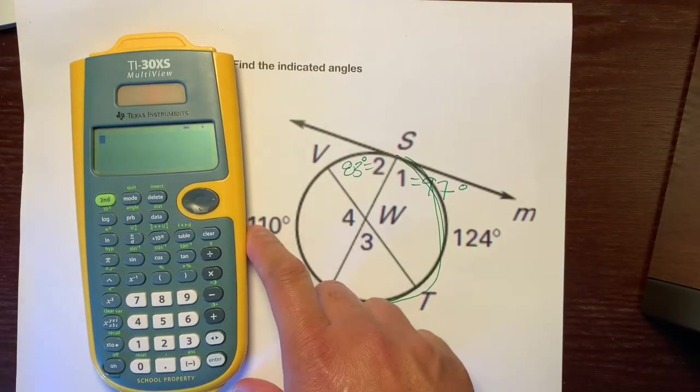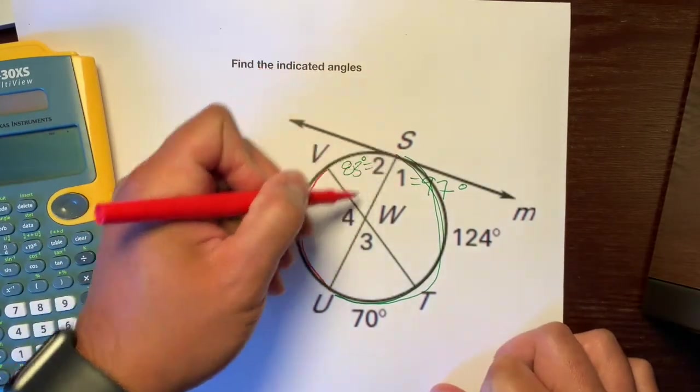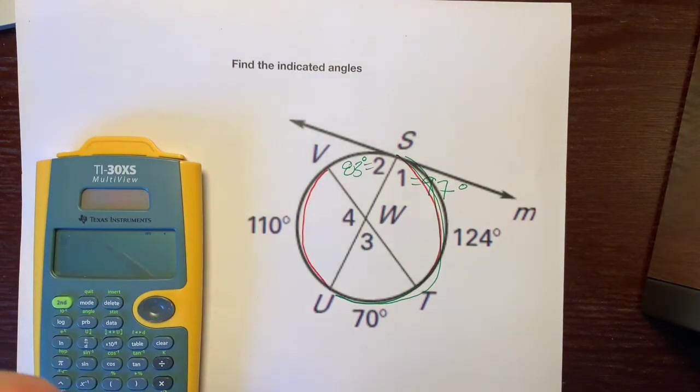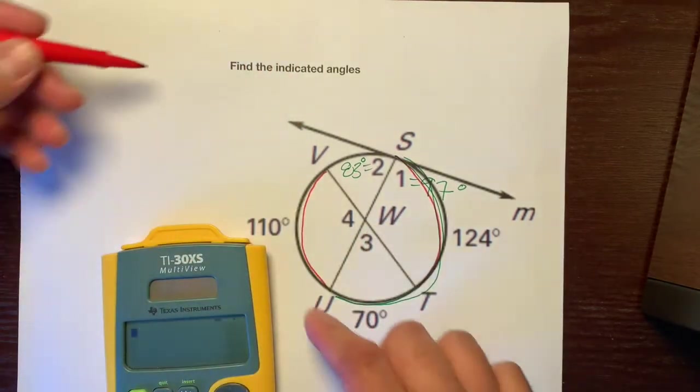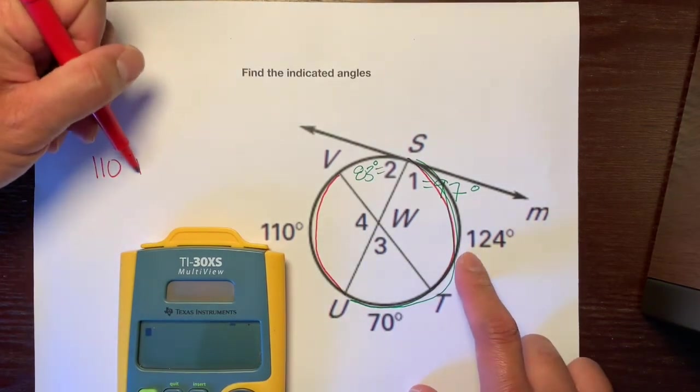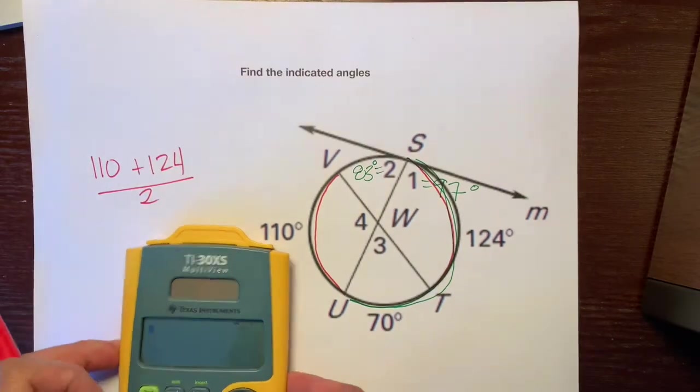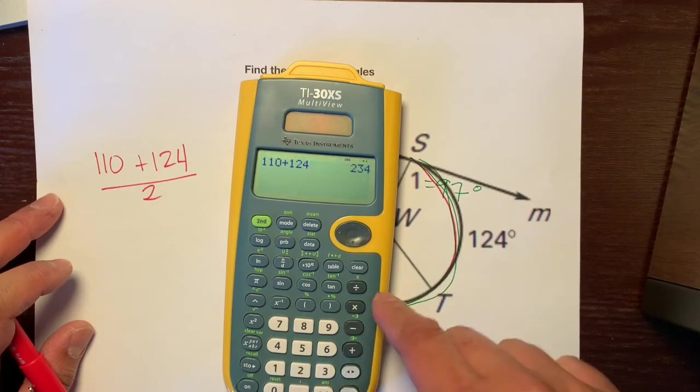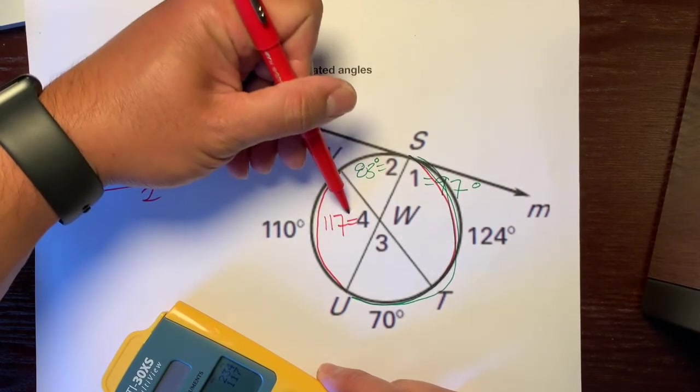Angle four intercepts this arc right here that's 110 and its vertical angle intercepts this 124. If you guys remember the formula for intersecting lines inside of a circle, what you do to figure out that angle is you take one of the arcs, 110, you find the sum of it with the other arc, which is 124, and you actually get the average of those two arcs. So we're going to do 110 plus 124 and divide it by two, which is 117 degrees. So angle four is 117 degrees.